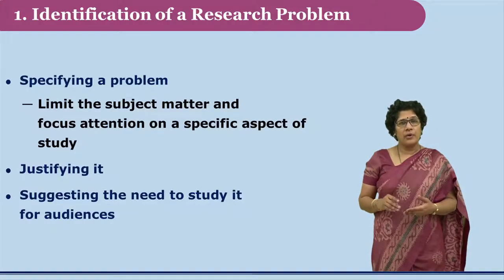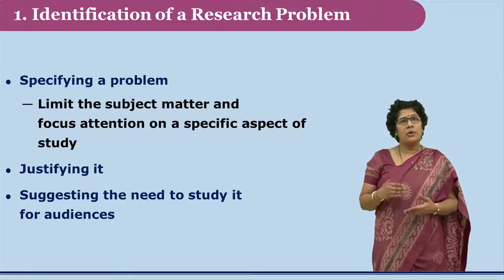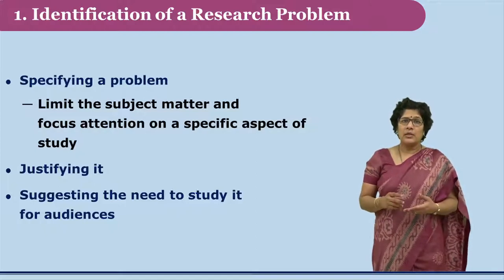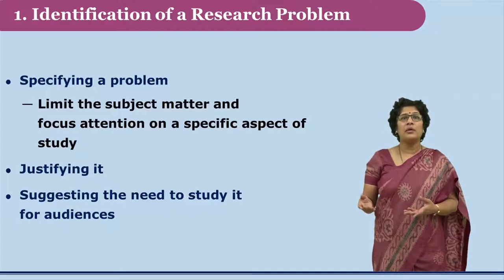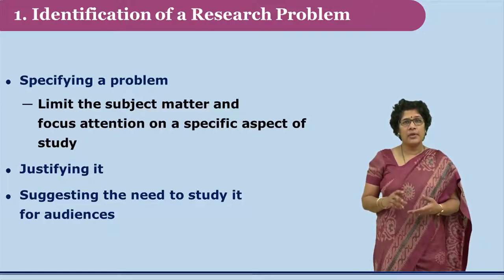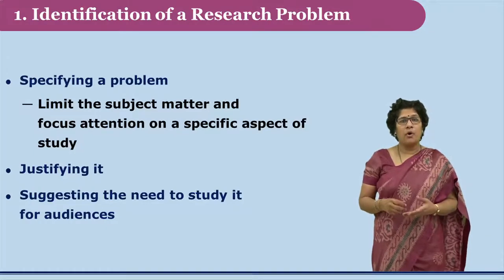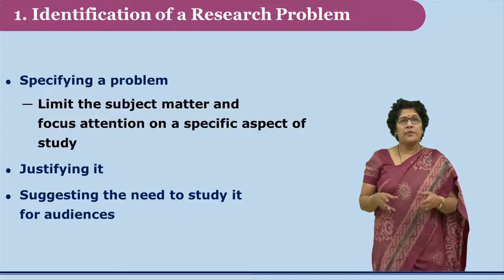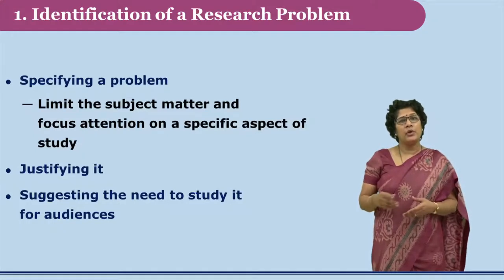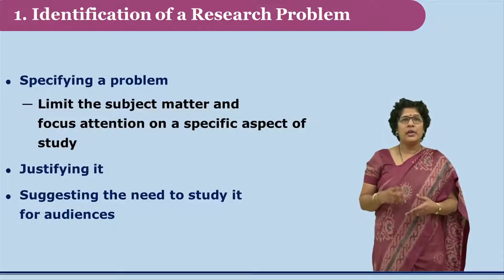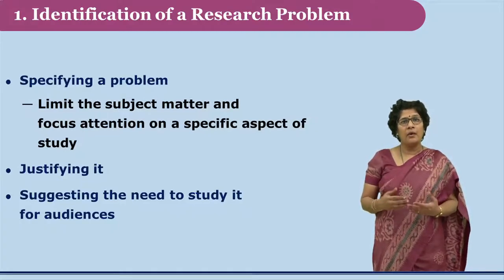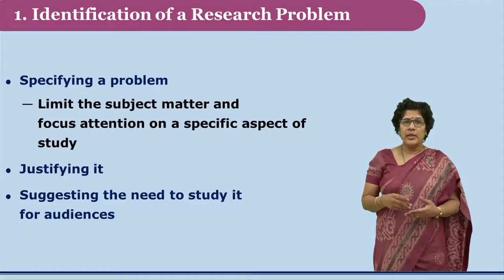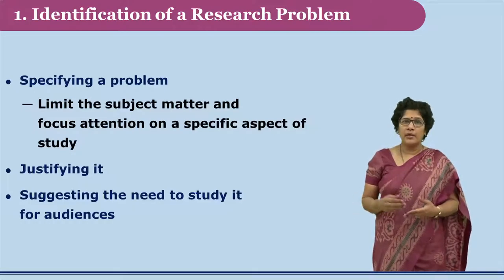In the first stage of identification of a research problem, the researcher also gives the justification for selection of that problem. The justification could be from the theoretical background, or at times from practical experiences. The researcher also gives the importance of the research study for the audience or for other practitioners — how the efforts will be useful for others. Thus, the researcher gives the broader perspective of the background on which the research is undertaken.